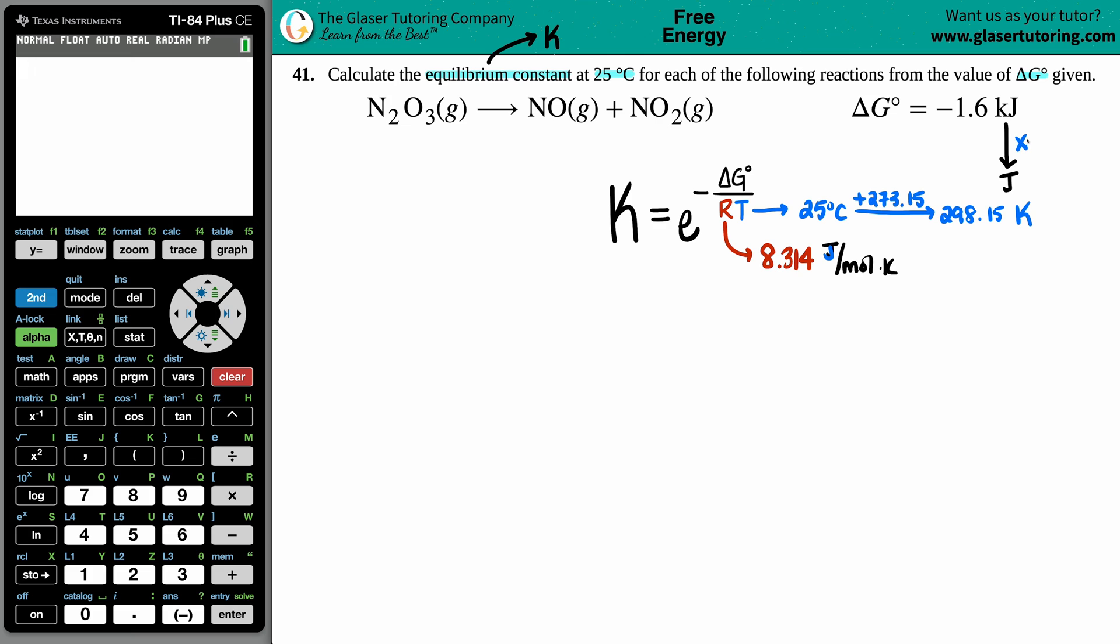Kilojoules to joules, times by a thousand. So I'm just going to take this decimal, move it to the right three times, and it seems like I got negative 1600. That looks about right, and that's the number going on over here. All right, let's solve for that equilibrium constant.